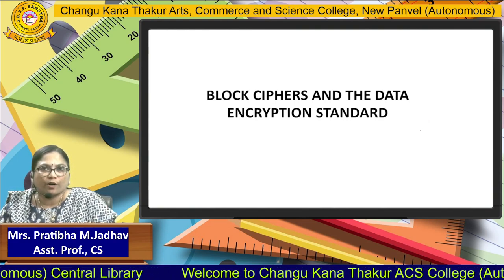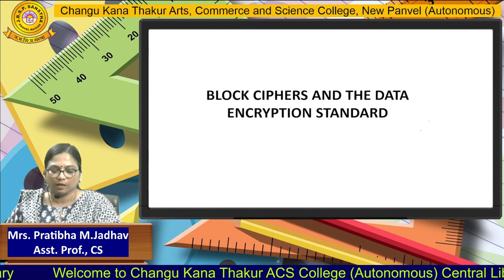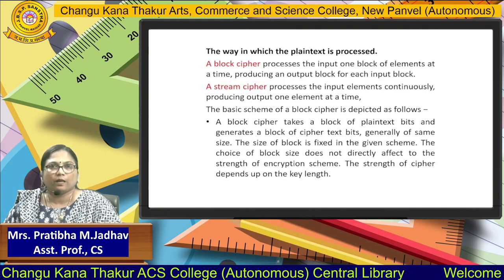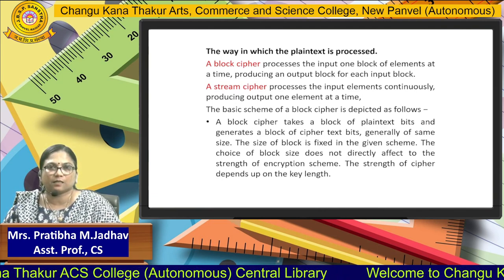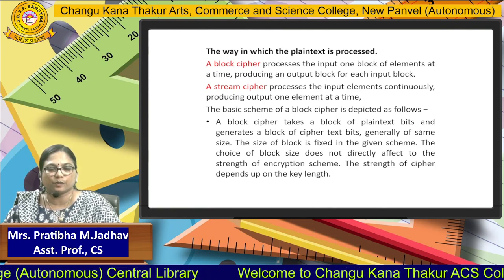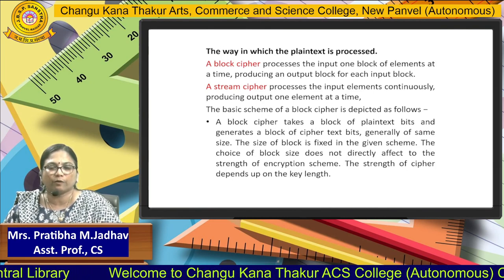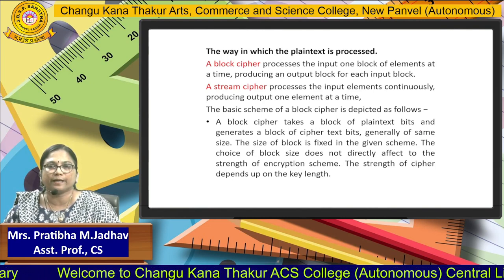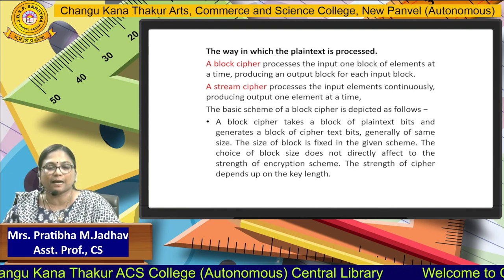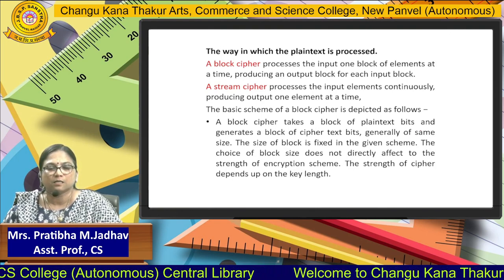We will go through what type of cipher techniques we can apply whenever we are using Network Security. The way which is going to cipher the plaintext — there are two different types: the Block Cipher and Stream Cipher. Block Cipher is the process of inputting one block of elements at a time and producing an output block for each input block. At a time, a number of strings together are going to be ciphered.